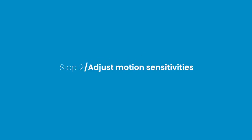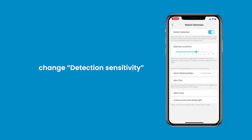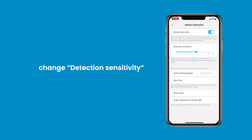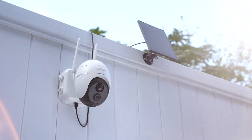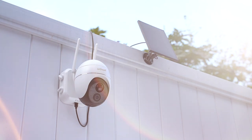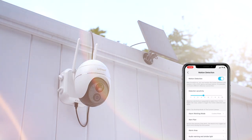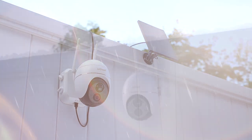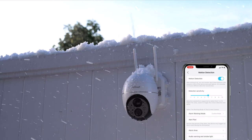Step 2: Adjust Motion Sensitivities. It is possible to adjust different detection sensitivities — just move the slider to change detection sensitivity. The sensitivity value ranges from 1 to 10. It is advised to increase the sensitivity value appropriately in summer and lower it in winter.